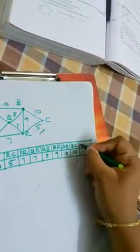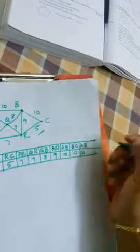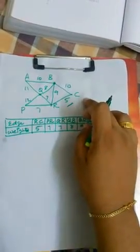So AB with weight 10 and BC with weight 10, next followed by AQ with the weight 11.